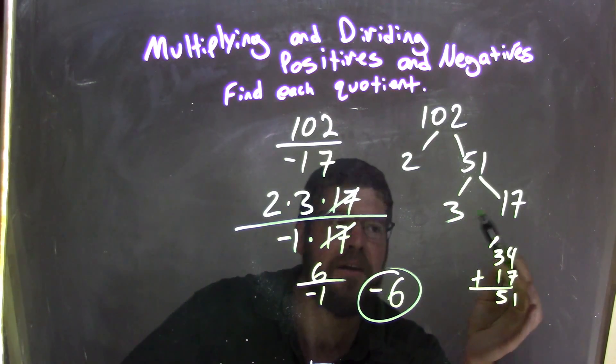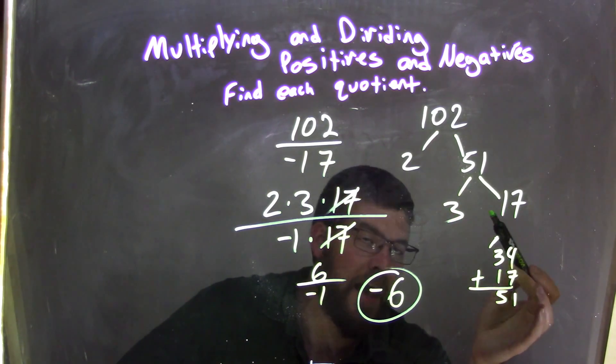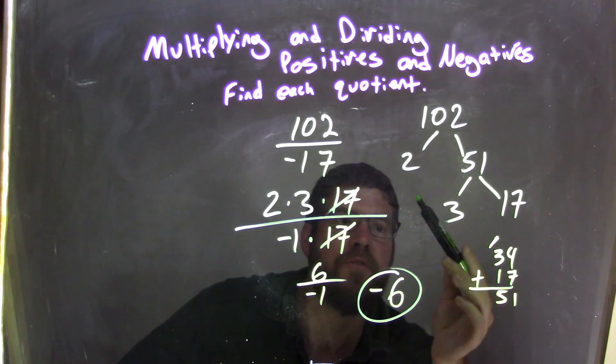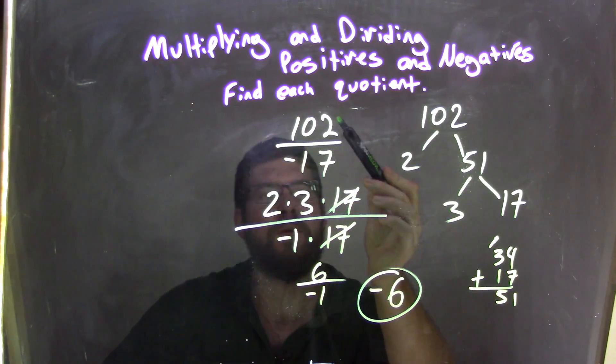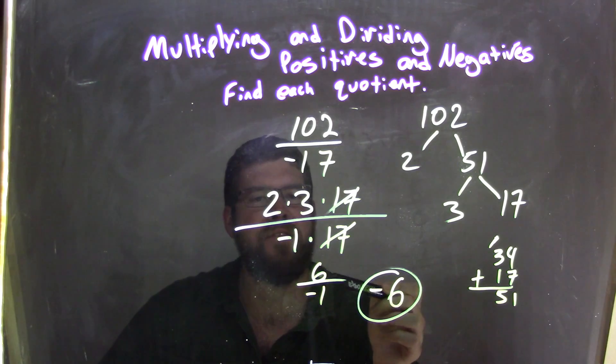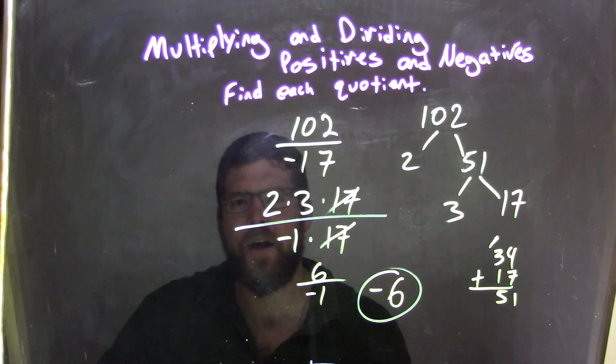So we had three 17s right here that add together to be 51, so 2 times 3 times 17 is equal to 102. I canceled out my 17s. 2 times 3 was 6. 6 divided by negative 1 was negative 6, our final answer.